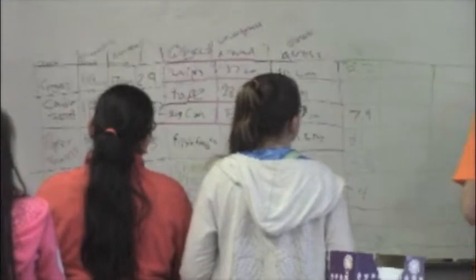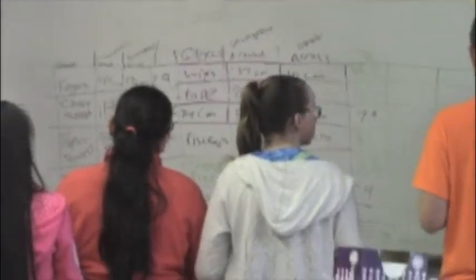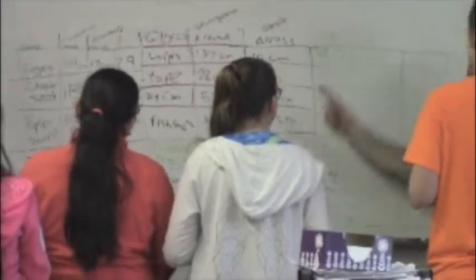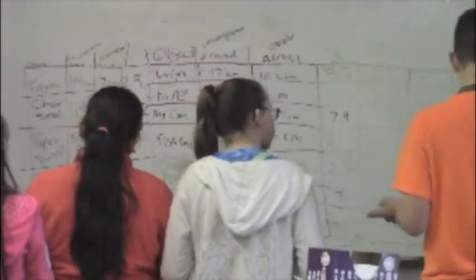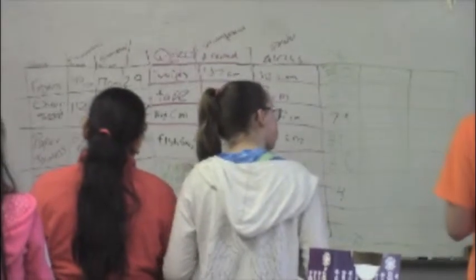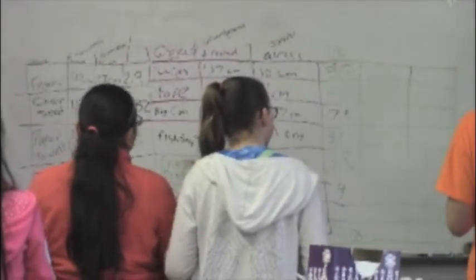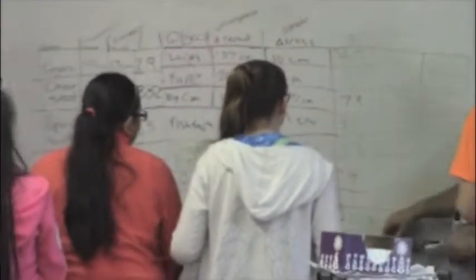In almost every case — in every case, if it's a perfect circle. There's a name for that relationship, and it's hugely important in science and math and architecture and everything. Does anybody know what it is?